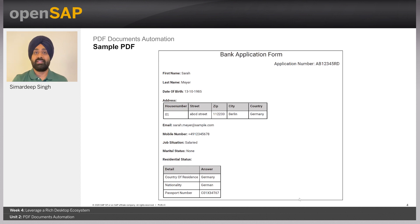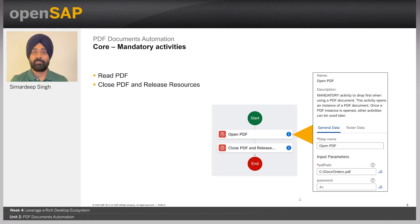In this slide you can see a sample bank application form. The aim of the PDF activities would be to extract information from this form, which is a PDF. Let's start with the core activities. The most important ones are the open PDF and close PDF activities. These are mandatory and should be used before and after the PDF extraction activities. The open PDF activity accepts the PDF path, and if the PDF is protected by a password, you can provide the password as an input parameter.